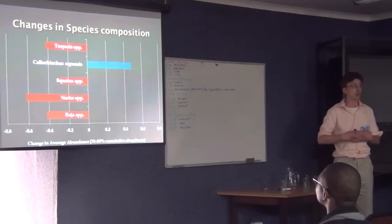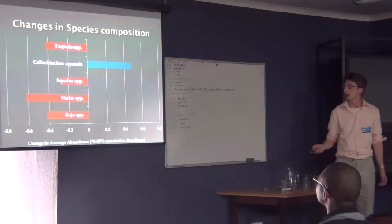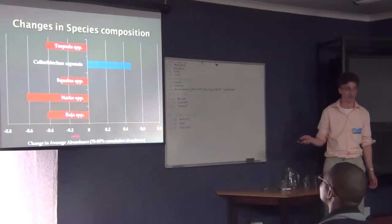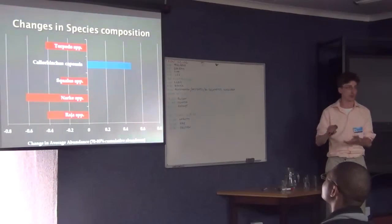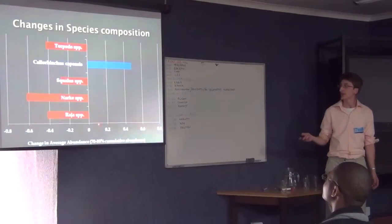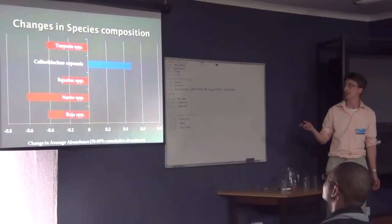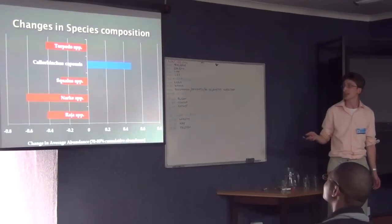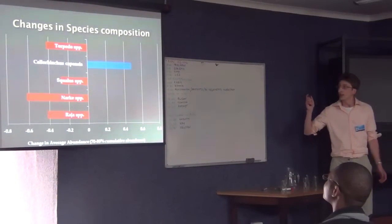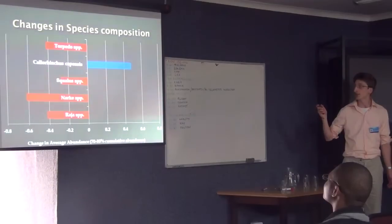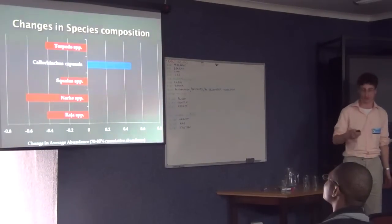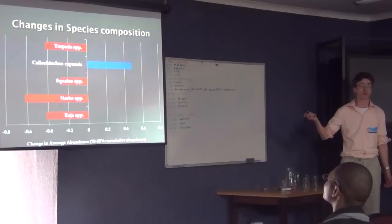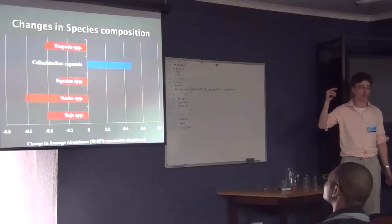Just a look at the catch composition at CPUE. Chondrichthyans only enter the cumulative abundance at around 70%, so they only form a small proportion of the bycatch. However, the trends are quite clear. We have decreases in electric rays, the spiny dogfish, the numbfish, and the skates. And the St. Joseph shark is the only chondrichthyan to have shown an increase in the catch composition. This is at species level, and these trends were consistent over all three taxonomic levels.